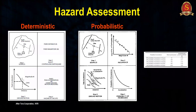Since we cannot predict earthquakes, we go for hazard assessment — identifying areas prone to earthquakes. Two approaches exist: deterministic, where we assess the maximum magnitude a known fault can produce if reactivated; and probabilistic, suitable for critical structures like nuclear power plants, estimating how many magnitude five or six earthquakes might occur over the next 100 years in that area.